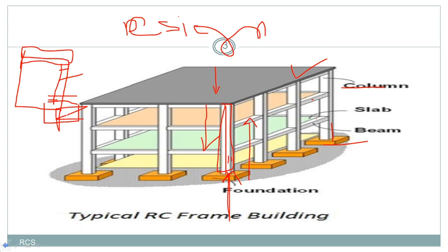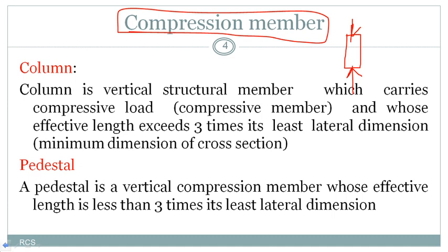What are the different compression members we have? The compression members are columns, pedestals, booms, and stanchions. Generally, columns and pedestals are used in RCC constructions, a boom is used in a crane, and a stanchion is a steel member in a truss. In this way we can use compression members. The compression members used in RCC construction are columns and pedestals.